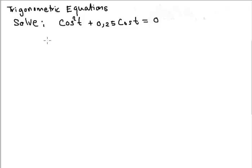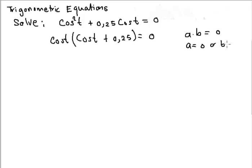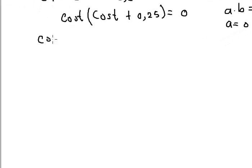So your first step would be to sort out that quadratic nature of this equation. Then you say cos t times cos t plus 0.25 equals zero. When you get to that stage, everybody must remember that if you've got a times b equal to zero, it means a is equal to zero or b is equal to zero. That's one thing you can never forget when you're dealing with this type of quadratic equation.